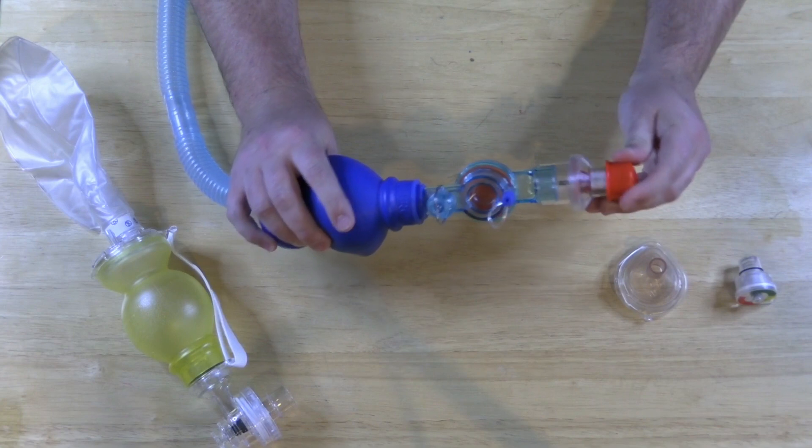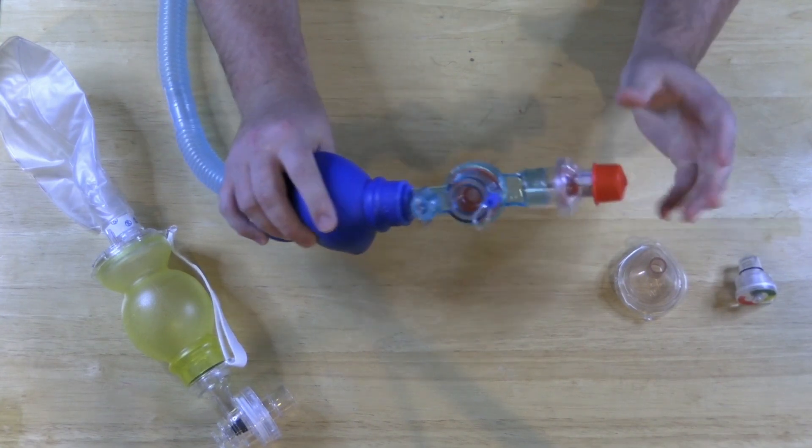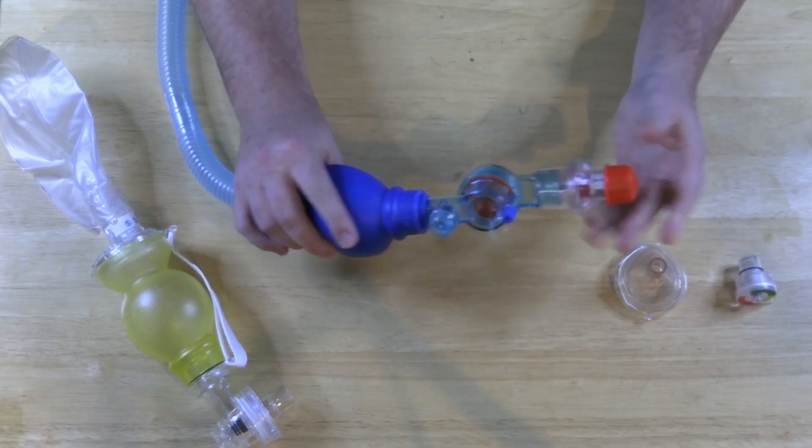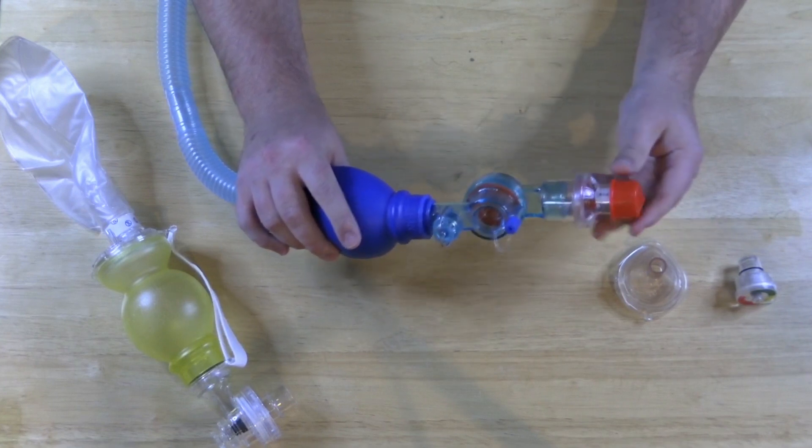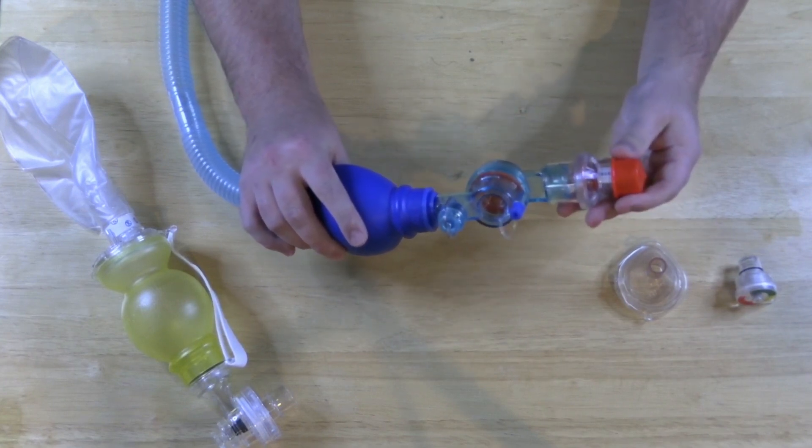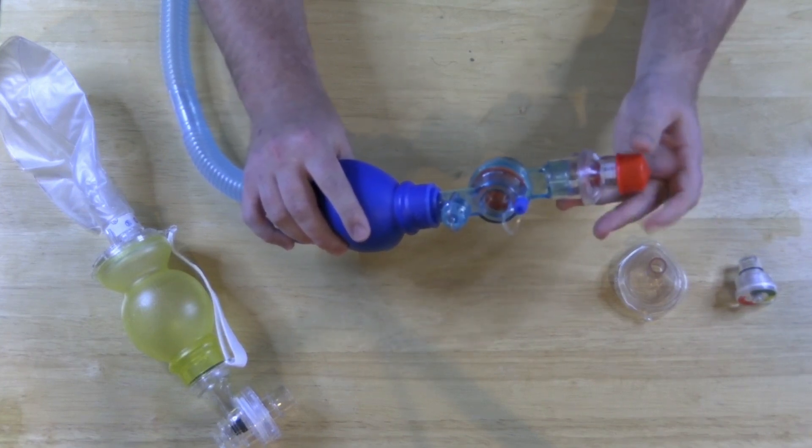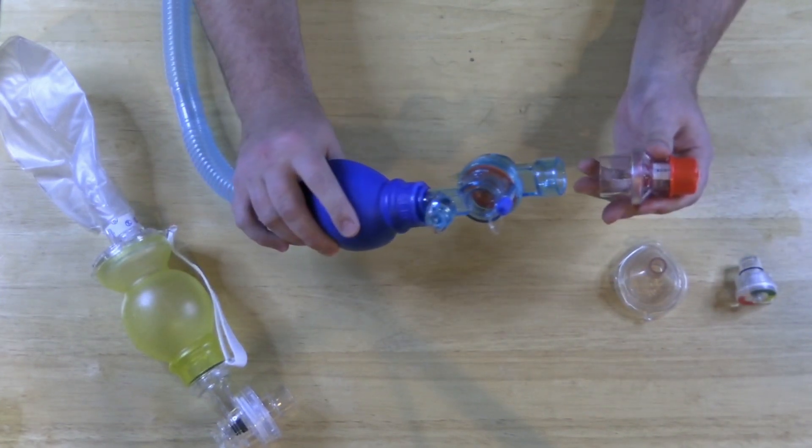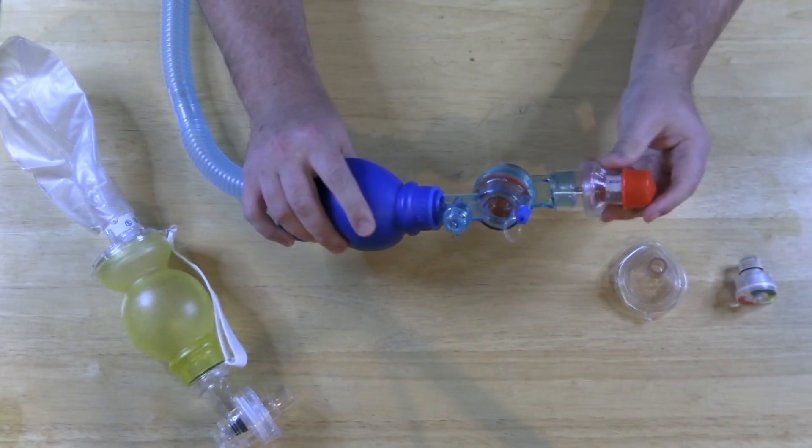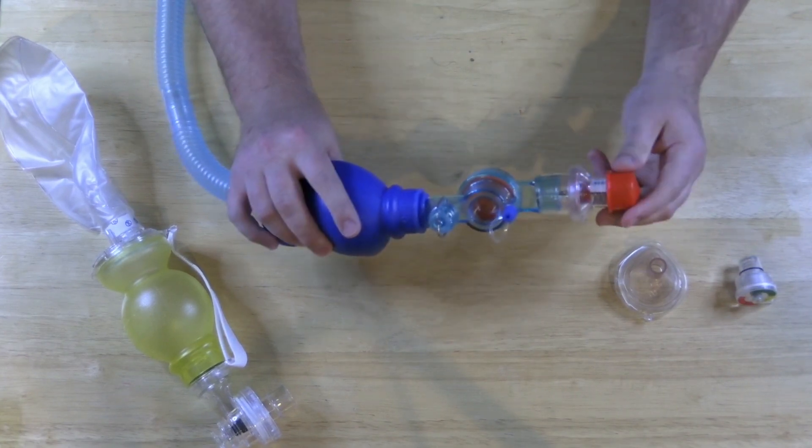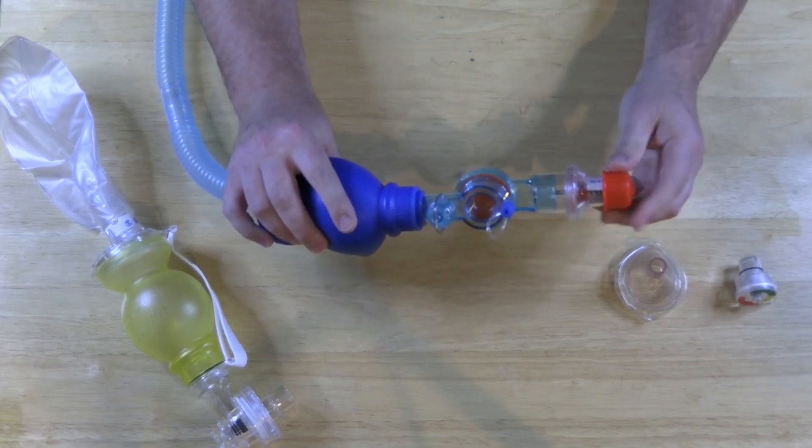If you wanted zero peep, like if it was an asthmatic or something like a baby asthmatic, the only way to get zero is not to turn this until it doesn't turn anymore, it's to actually just pull this off. But during the pre-oxygenation period you're going to want that on at least at five I would say.